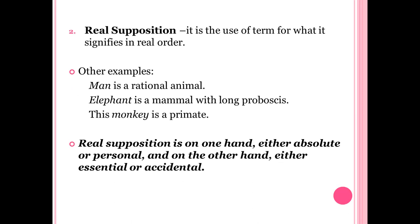Real supposition is the use of a term for what it signifies in the real order — the actual, real meaning of the term for the object. The supposition of chair is real in the sentence 'The chair is used to block the pathway' because the chair is already existing and refers to something in the real order. Examples of real supposition: 'Man is a rational animal'; 'Elephant is a mammal with long proboscis'; 'The monkey is a primate.'